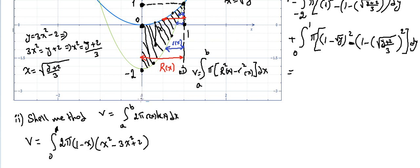Okay, part 2, volume of revolution. We were doing the shell method in part 1, and we found that the volume is equal to the integral from a to b of 2π r(x) h(x) dx.